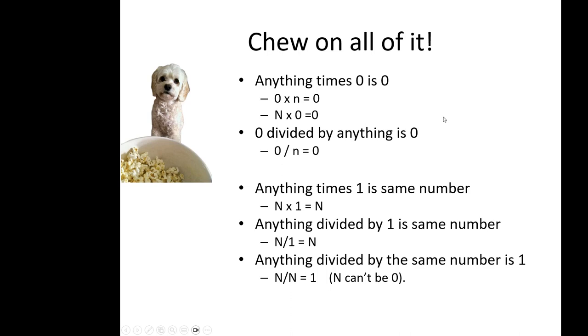Anything times zero is zero. Zero divided by anything is zero. Anything times one is the same number. Anything divided by one is the same number. Anything divided by the same number is one.